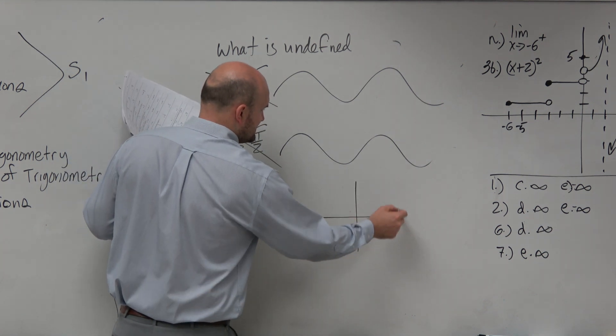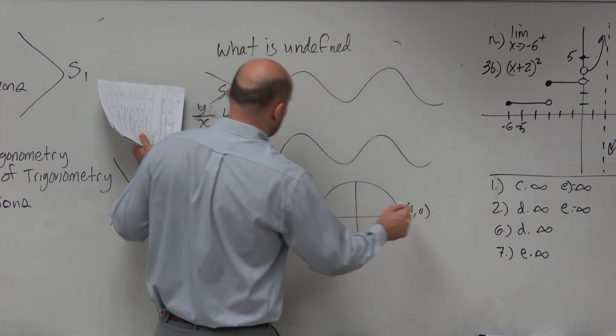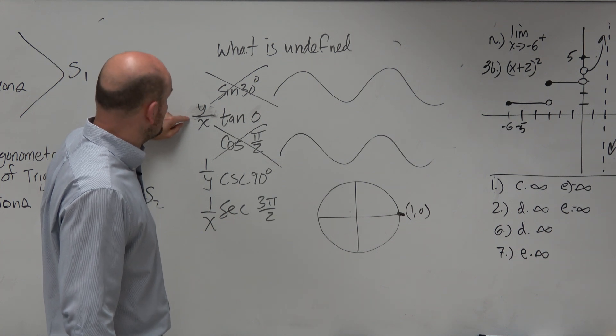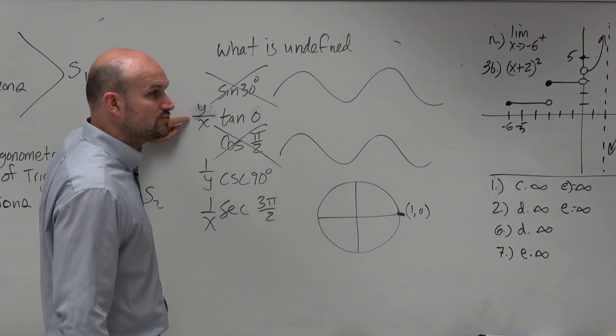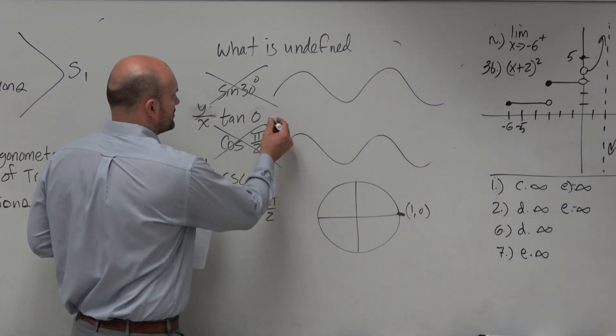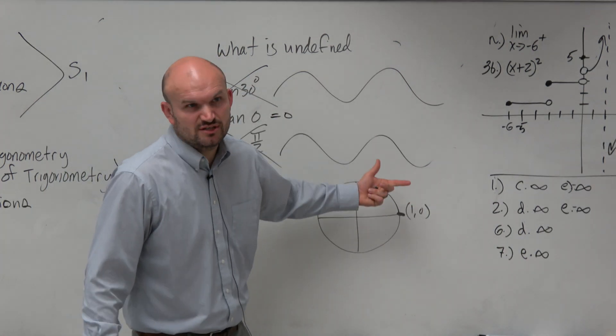So the tangent of 0, going back on the unit circle, 0 is the point 1 comma 0. So here, I take the y-coordinate, which is 0 over 1. Is that undefined? No, it's just equal to 0. Y over x, which is equal to 0.